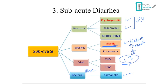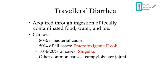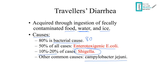Giardia causes diarrhea in travelers. Viruses like cytomegalovirus and HCV can cause diarrhea in immunocompromised patients. Traveler's diarrhea is acquired through ingestion of fecally contaminated food, water, and ice. Bacteria account for 80% of cases; in 50% of cases the organism is enterotoxigenic E. coli, and in 10–20% it is Shigella species. Other common causes include Campylobacter. Symptoms usually resolve in about a week, but if they persist, think Giardia.